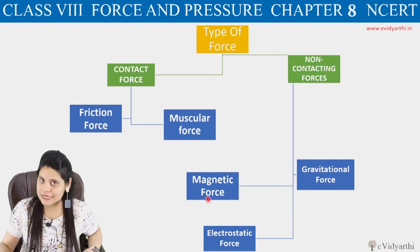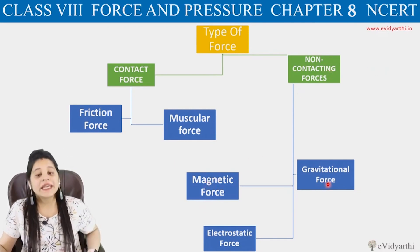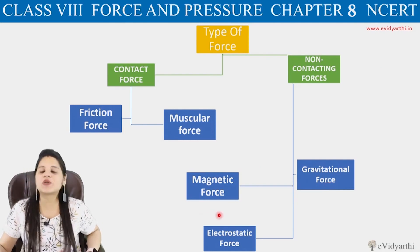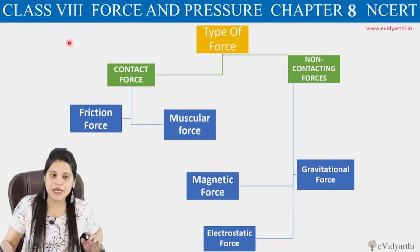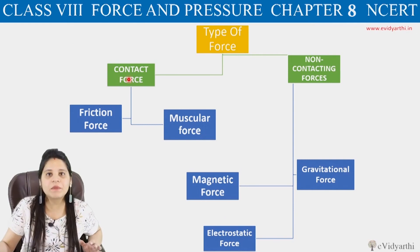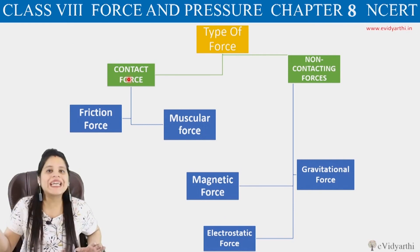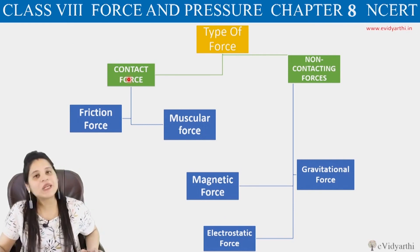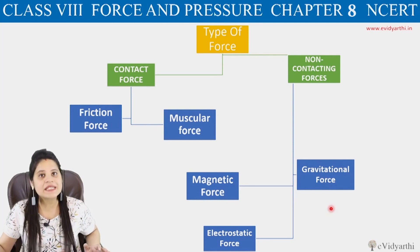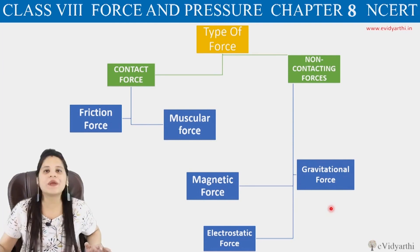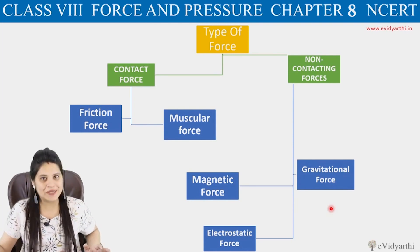For non-contact forces, there are three types: magnetic force, gravitational force, and electrostatic force. We will first look at the main headings and the differences, and then study all the headings in detail.